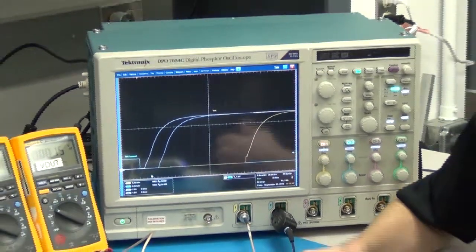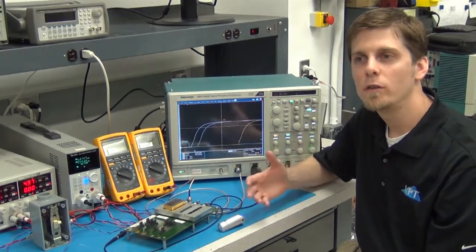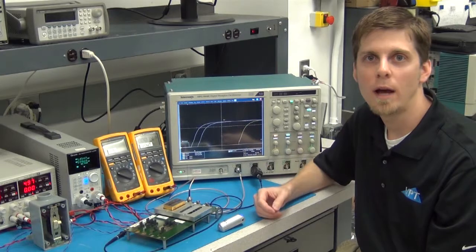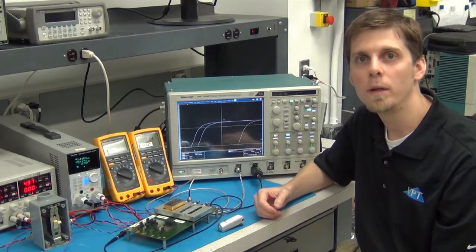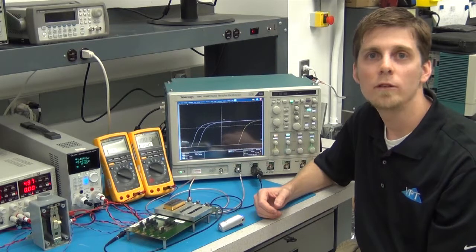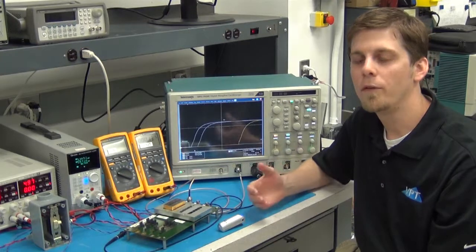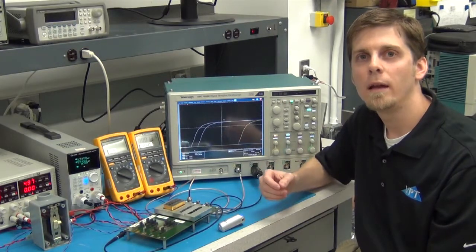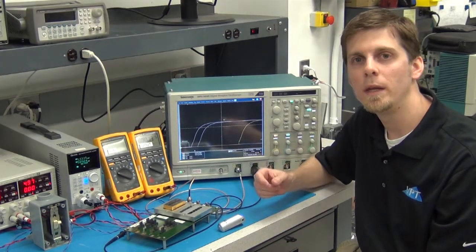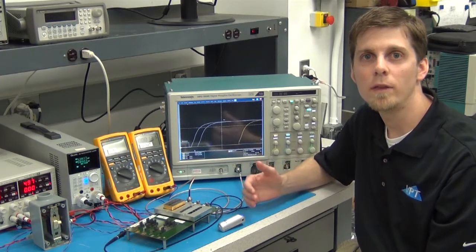So today we have talked about the inhibit function in our converters and general concepts about how to drive the inhibit pin. Make sure to use open collector or an open drain type circuit and do not drive it with an external voltage or TTL chip. And we've also shown how you can add a capacitance from the inhibit pin to input common in order to delay the turn on.